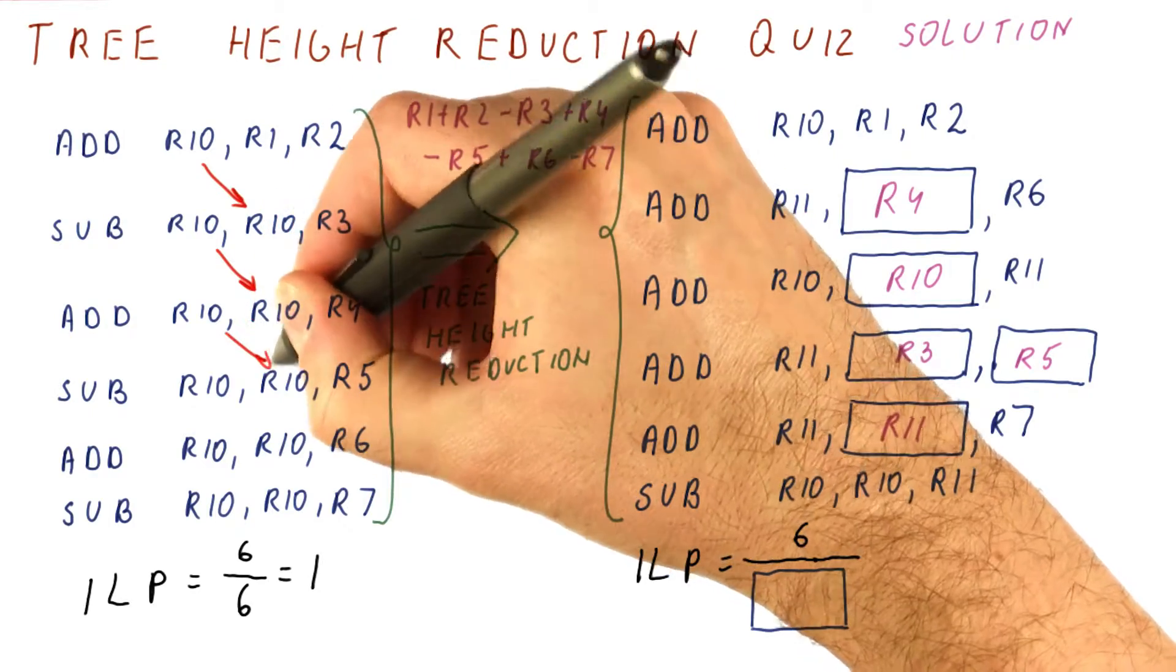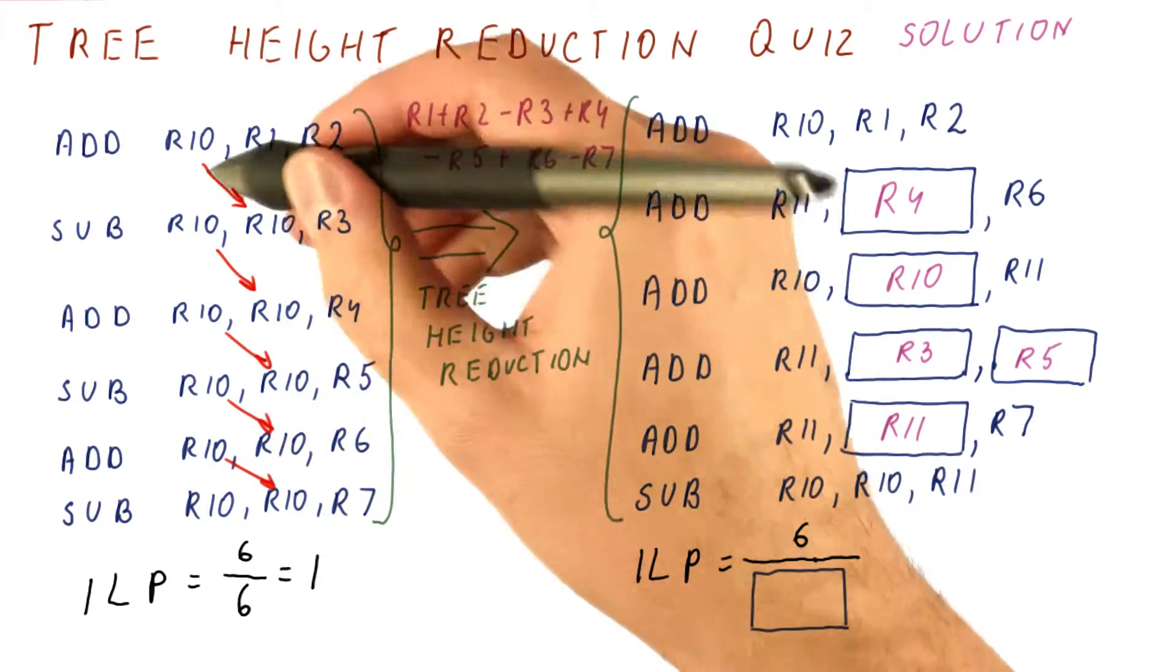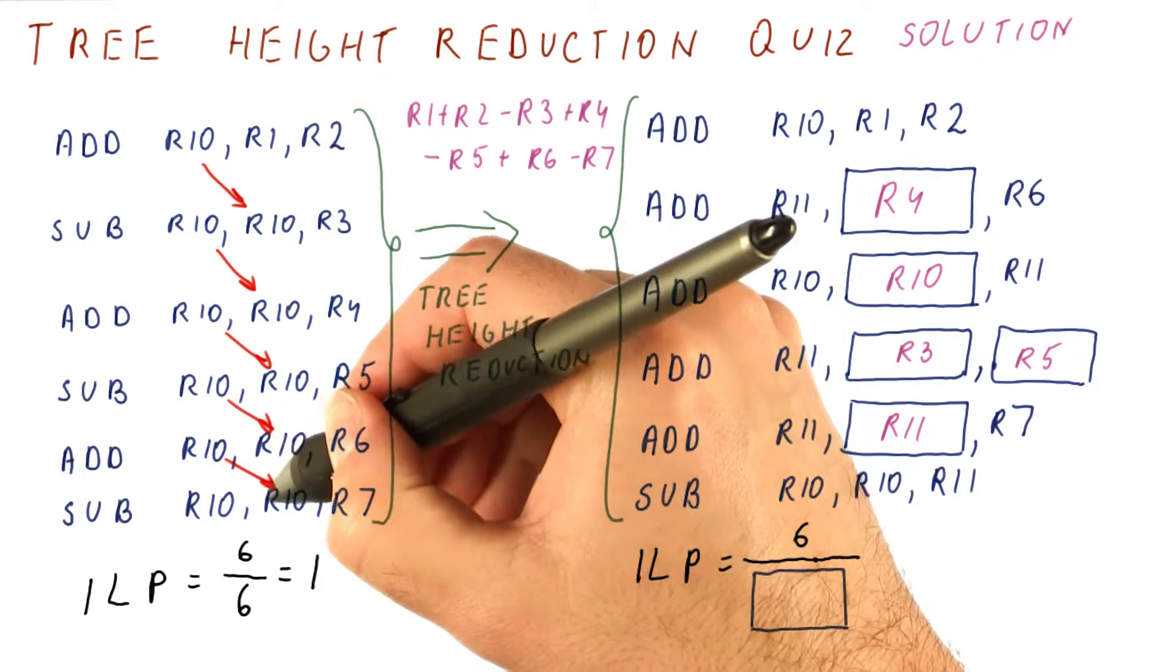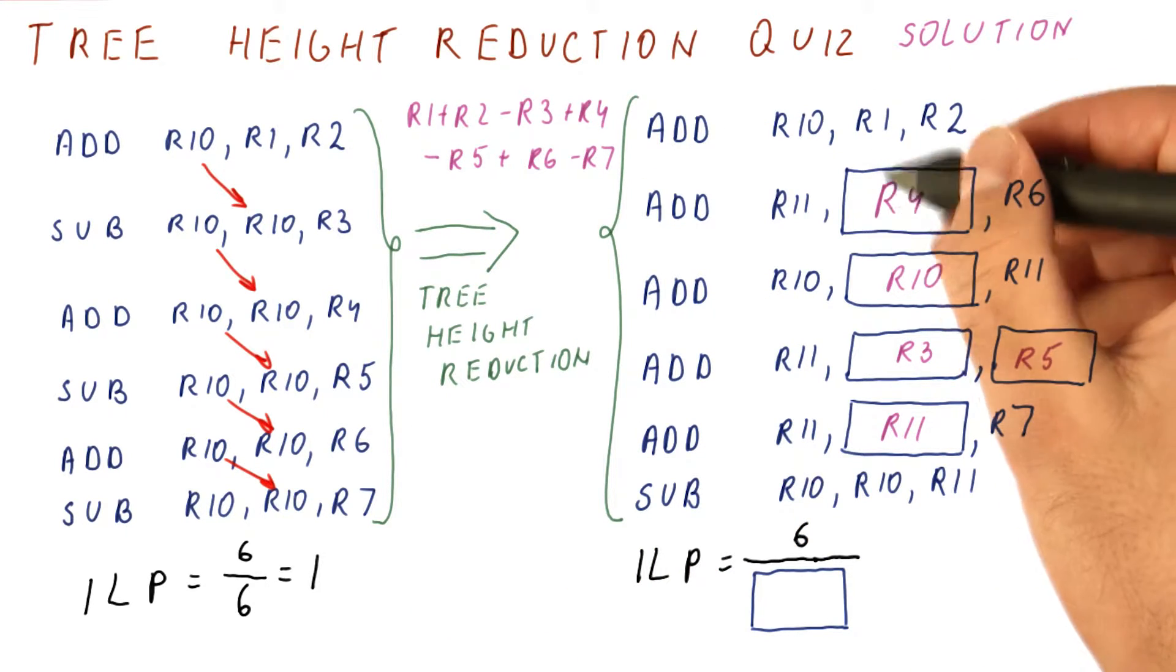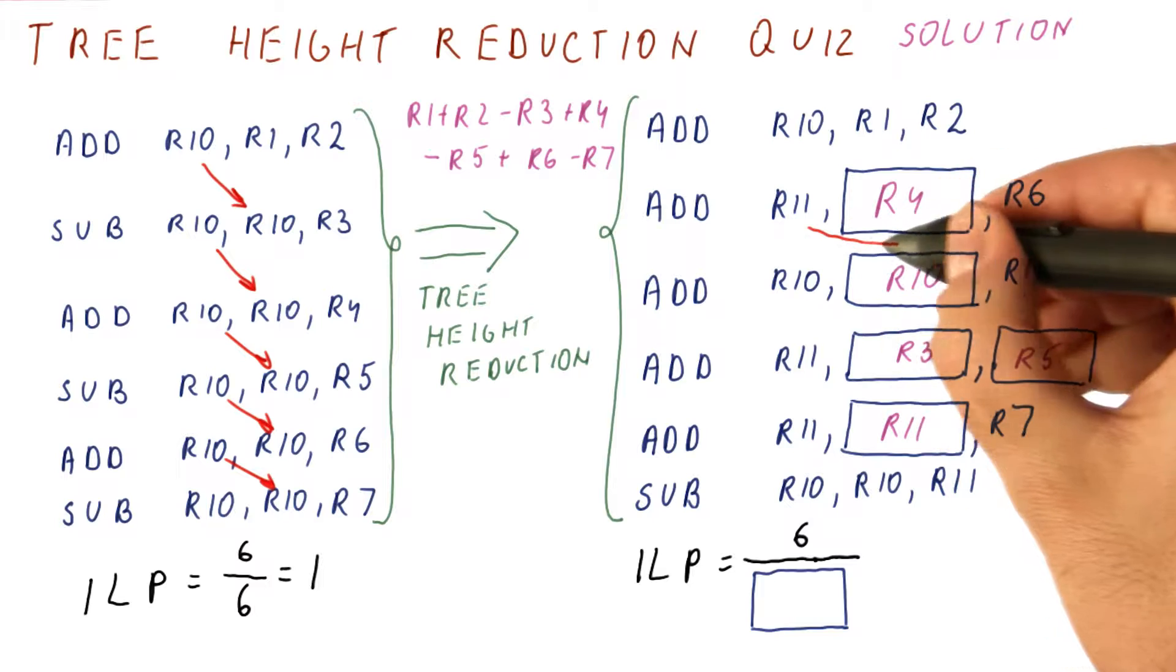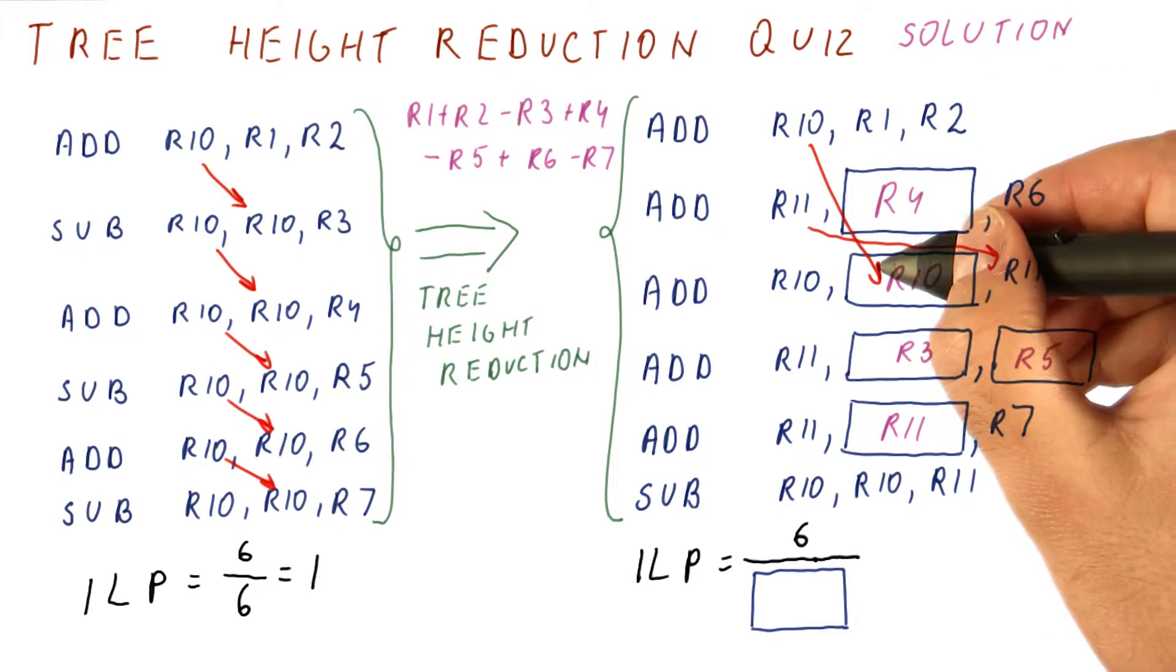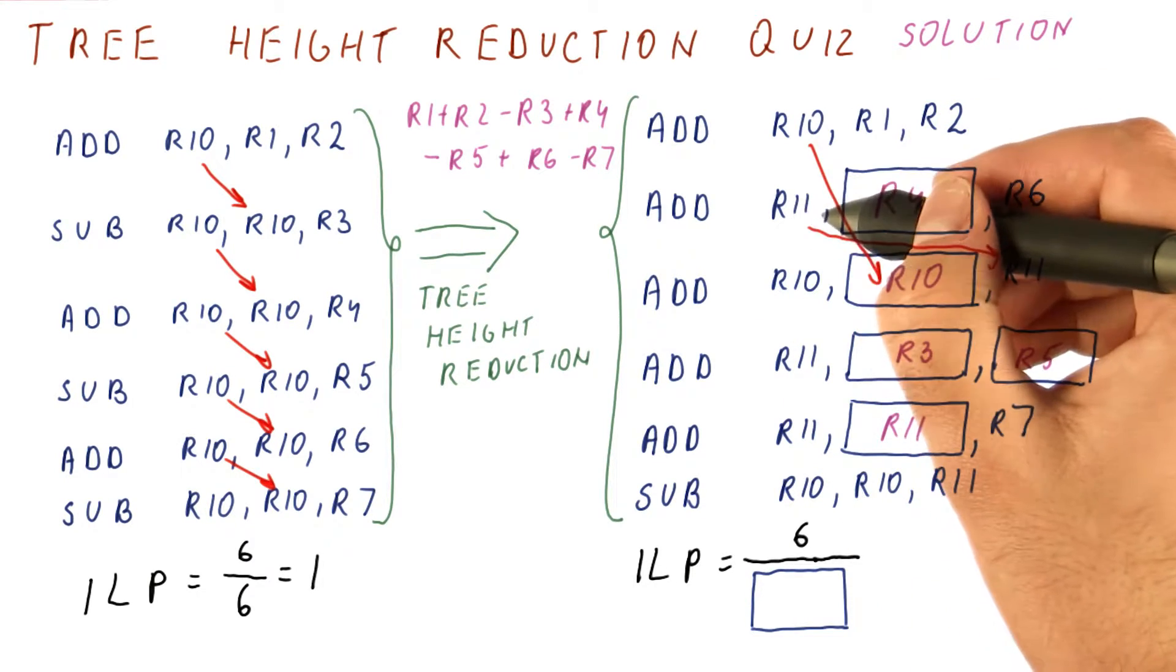Here we have the dependence again like this. So each instruction needed to be done right after the previous one is done. Here, there is no dependence between these two. There is a dependence here and here. So the third instruction needs to wait for the first two to complete.